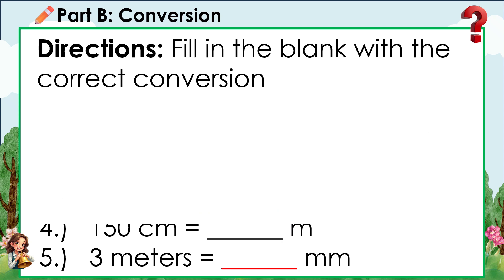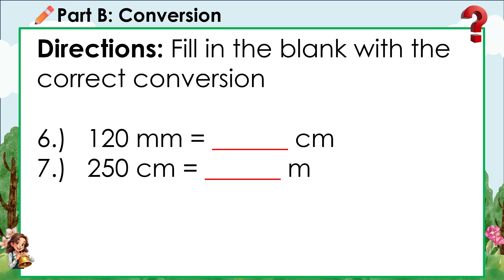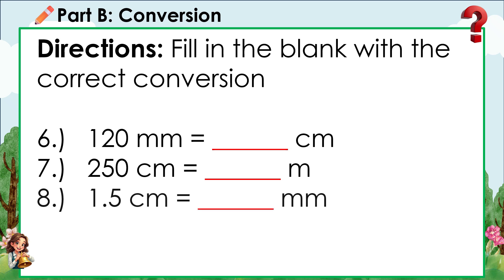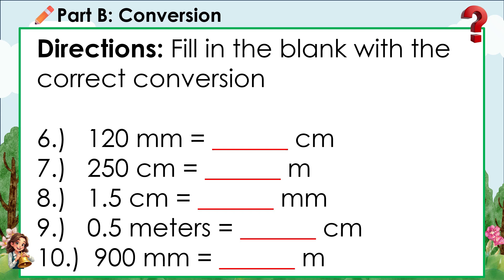6. 120 mm is equal to blank cm. 7. 250 cm is equal to blank meters. 8. 1.5 cm is equal to blank mm. 9. 0.5 m is equal to blank cm. 10. 900 mm is equal to blank meters.